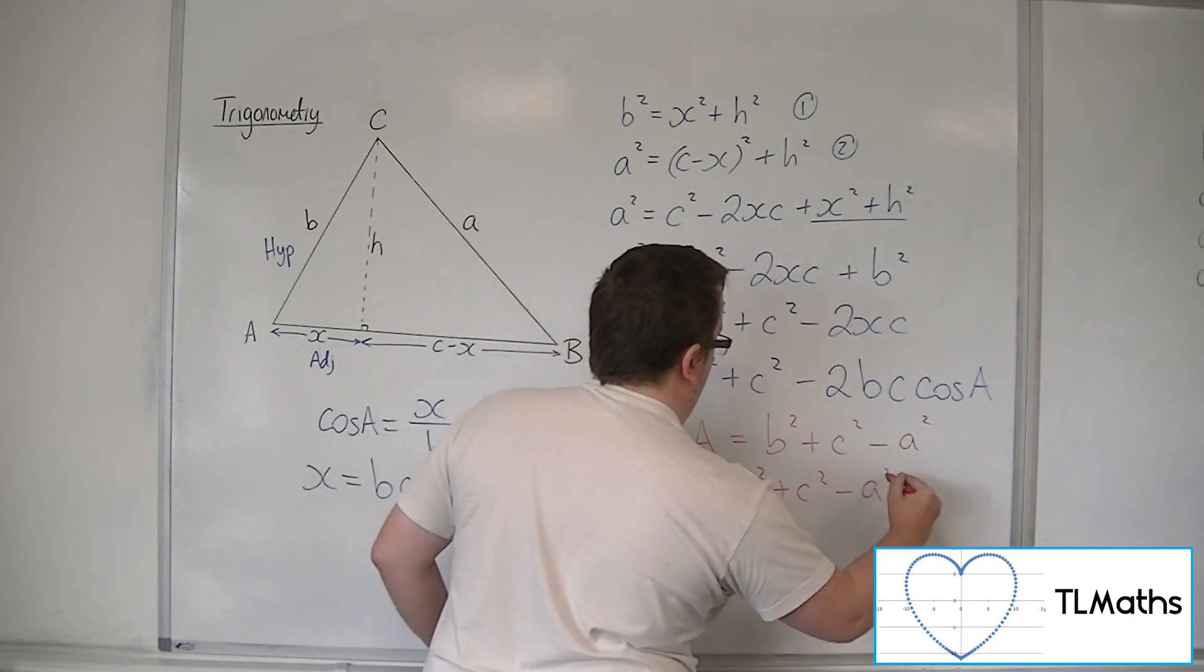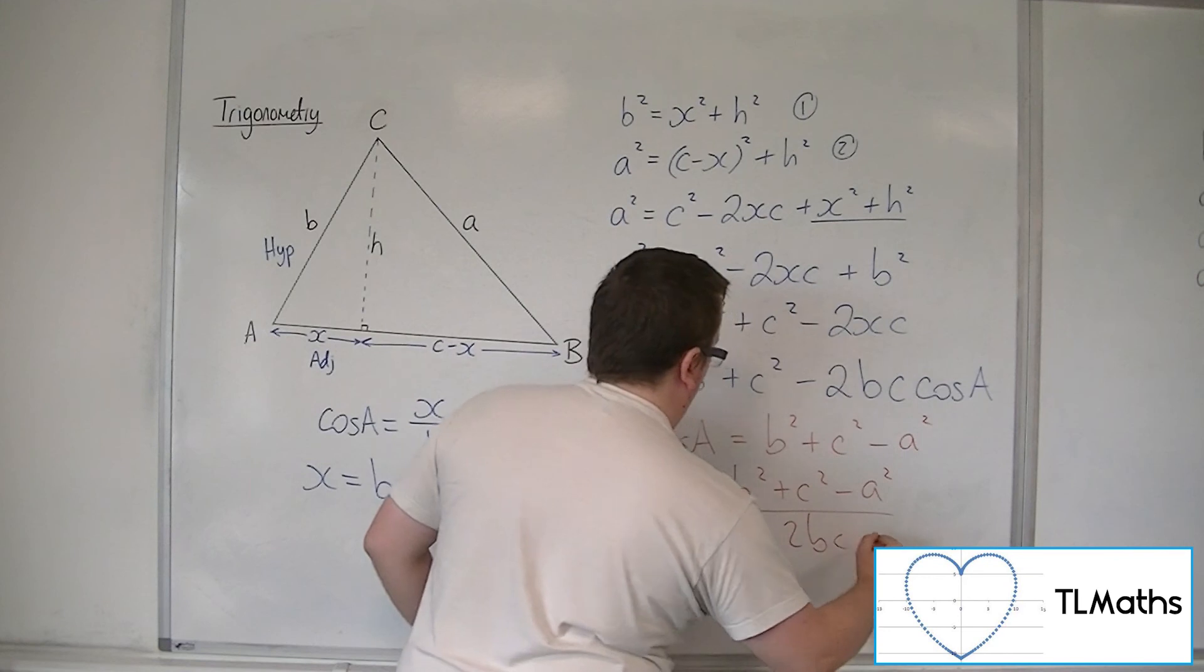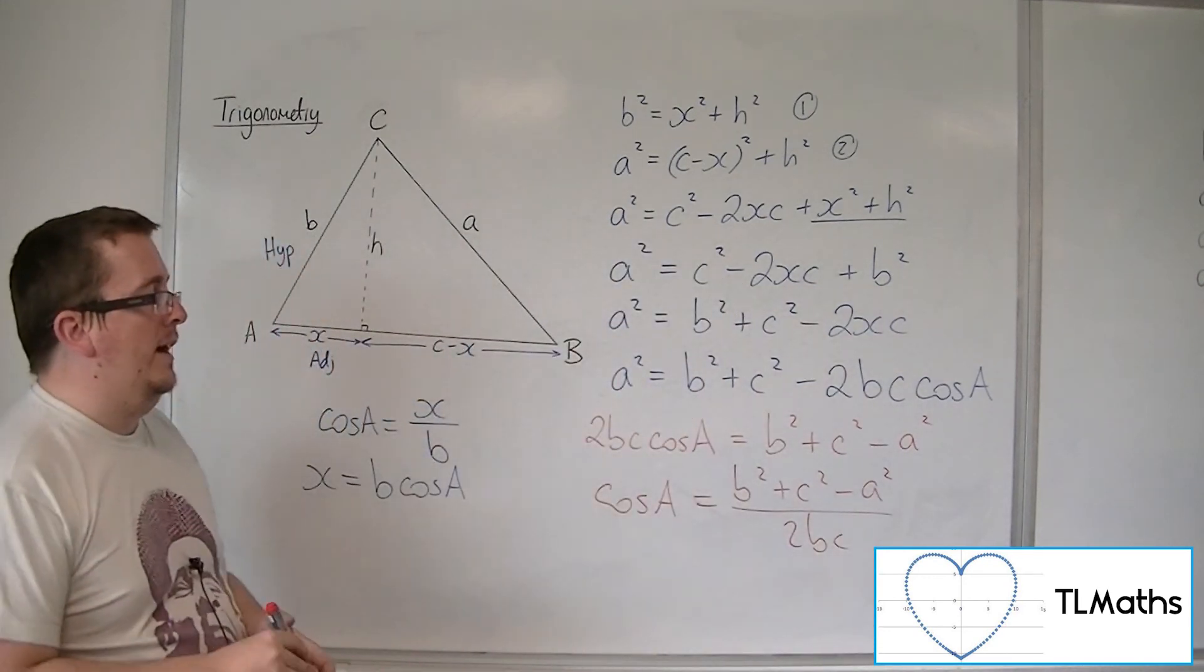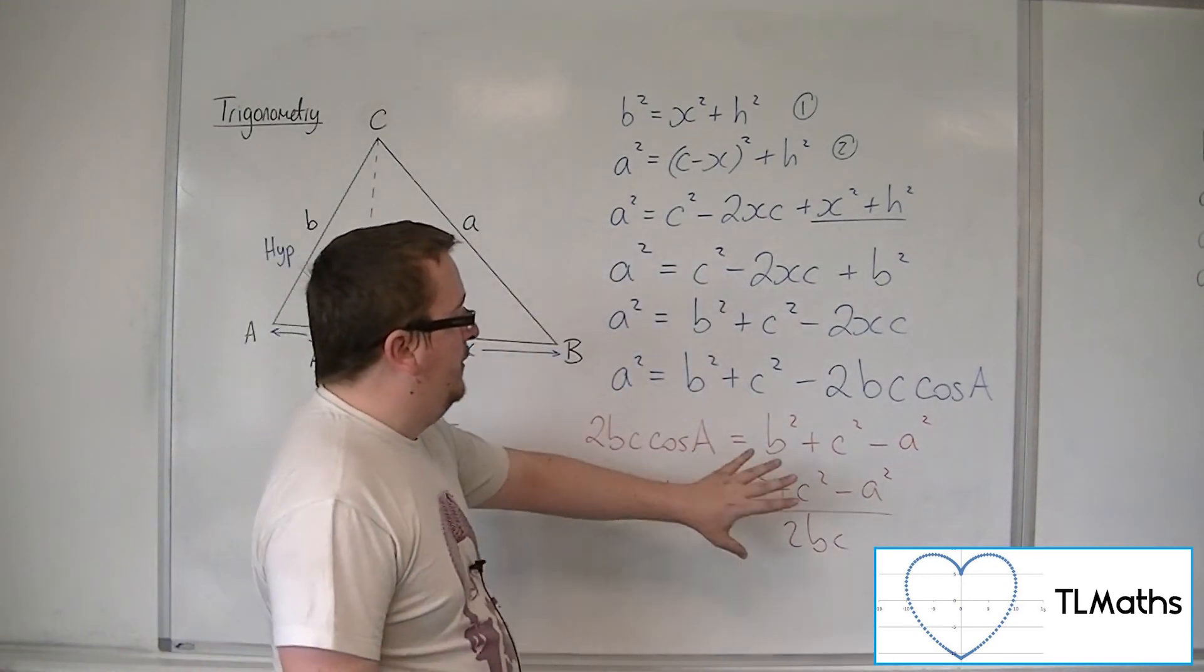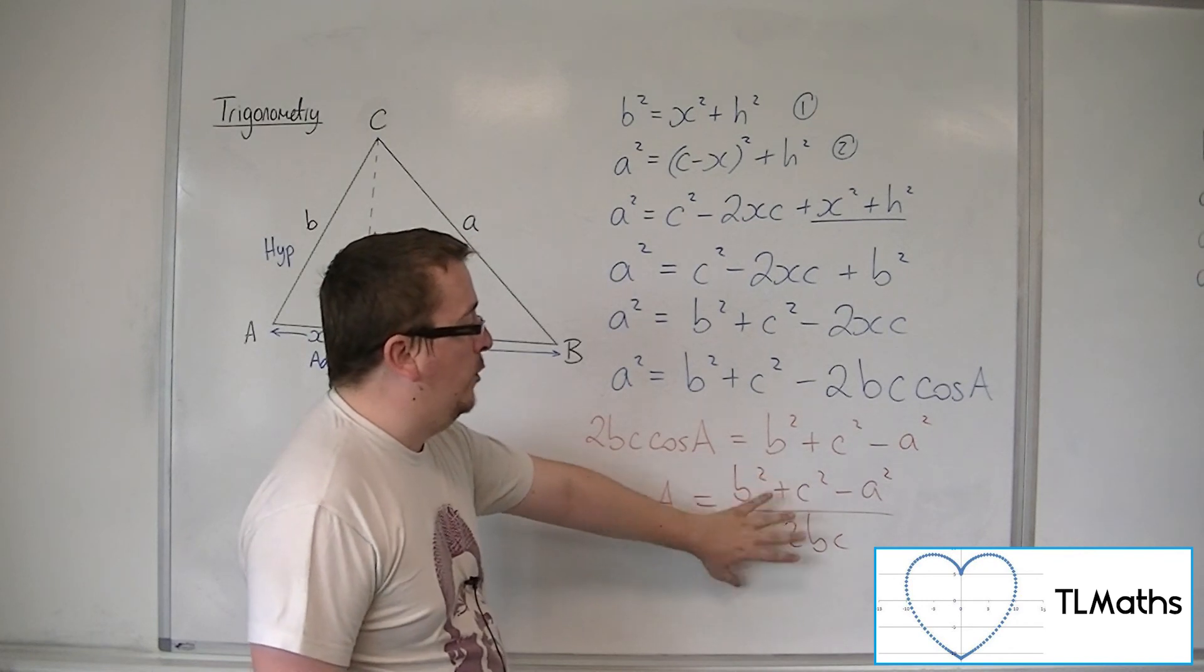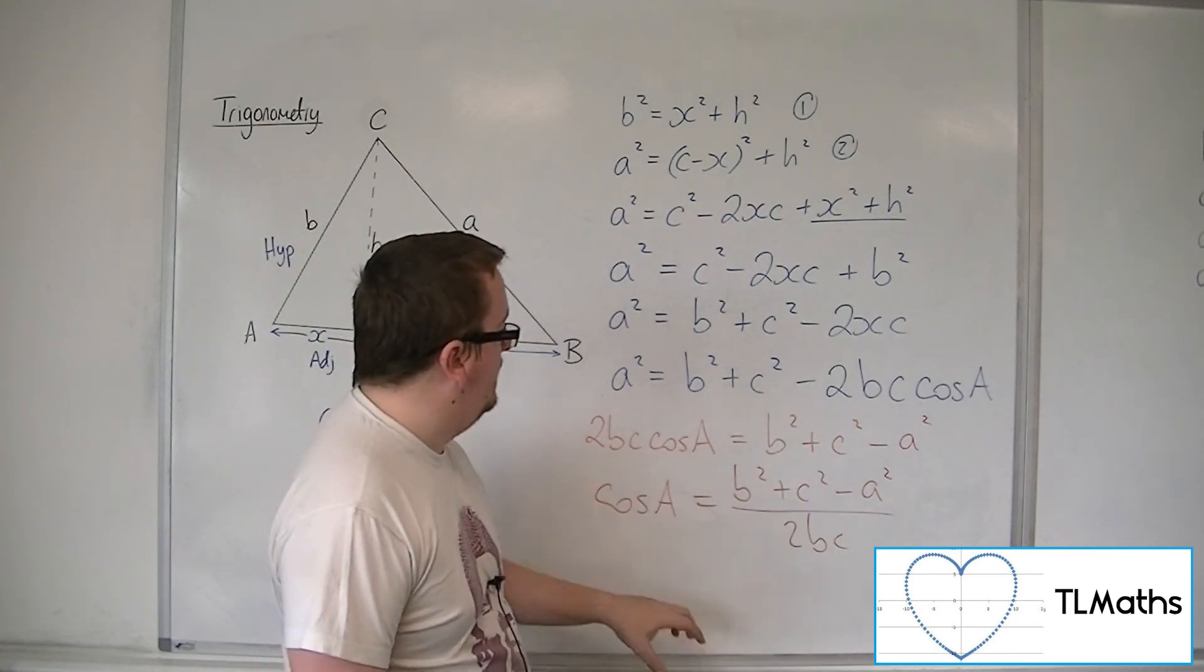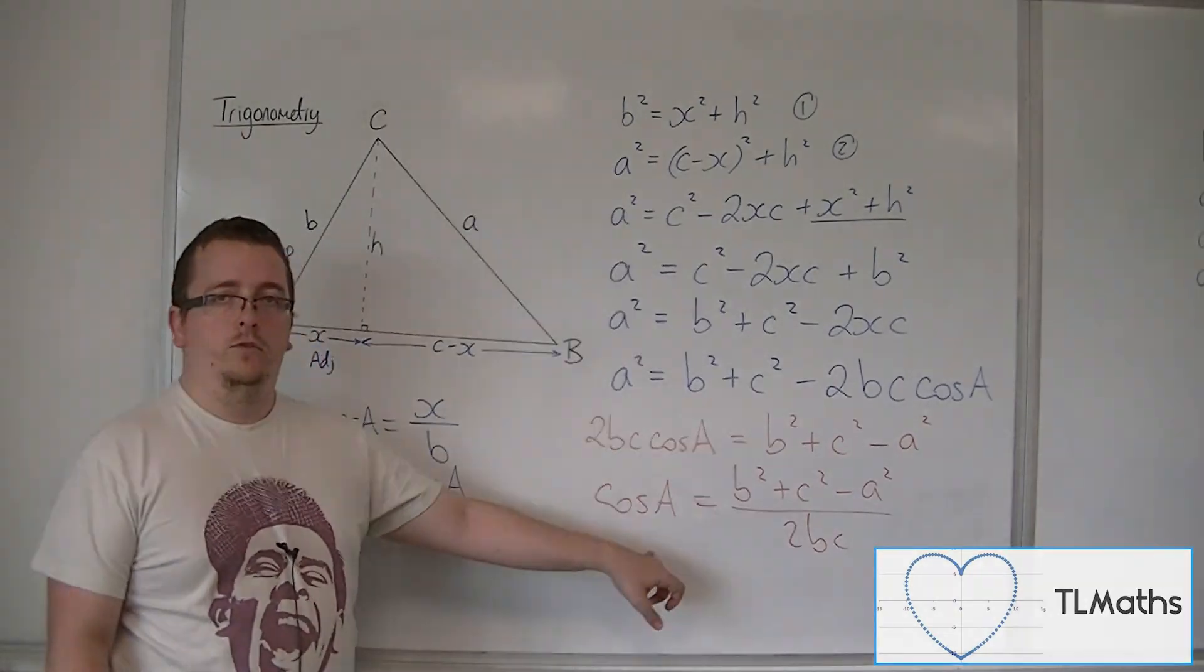And we get a formula for cosine of the angle A, which allows us to find just using all three sides, substitute them in, and then inverse cosine to find the required angle.